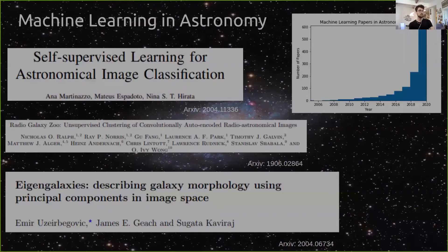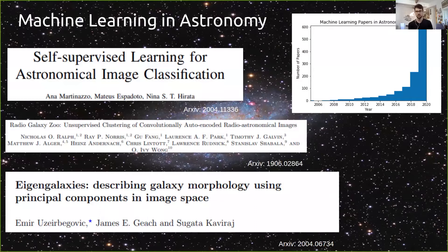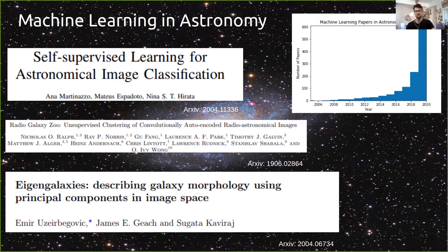Machine learning in astronomy — I'm sure everybody's heard the term. It's very popular. Looking at some favorite ML papers, they cover a large breadth of topics: astronomical imaging classification, unsupervised clustering, and the eigengalaxies paper that constructs eigenvectors to build galaxies and predict their properties. If you search 'machine learning in astronomy' on arXiv and plot the number of papers, you'll see exponential growth since about 2010, and in the last year it has truly blown up.